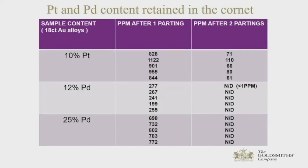This table — admittedly only 5 to 10 samples in total because it's still an ongoing project — gives an idea of how much platinum and palladium is retained in the cornets. The data shows total removal of any palladium content. Taking quite high amounts: 10% platinum, 12% palladium, and 25% palladium after one parting, you can see the ppm of those elements left in the cornet. After the second parting, even at 25% palladium content, we get total removal — less than 1 ppm. Platinum is slightly harder, but on average we're looking at no more than about 100 ppm after two partings, which for our application would be fine.